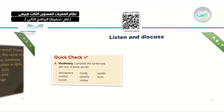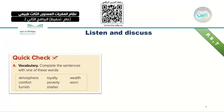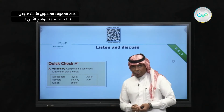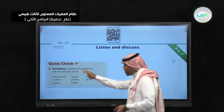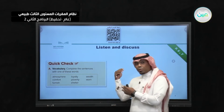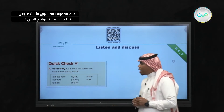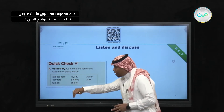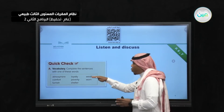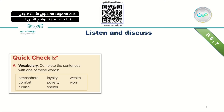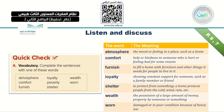Now let's do a quick vocabulary check. We need to know the meaning of these vocabulary words. Complete the sentences using: atmosphere, comfort, fairness, loyalty, poverty, shelter, wealth, and worn, as you can see here.